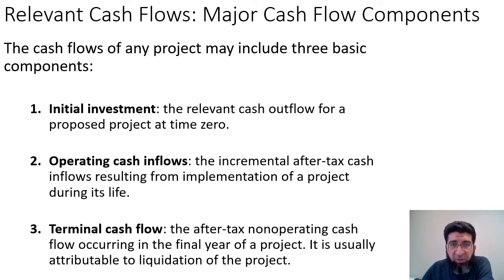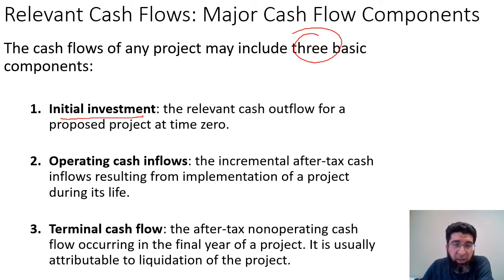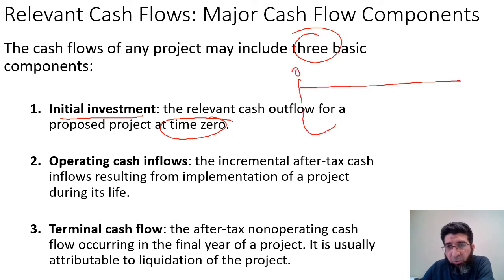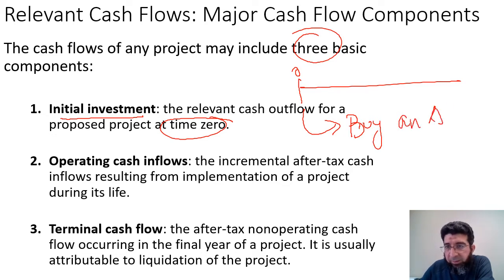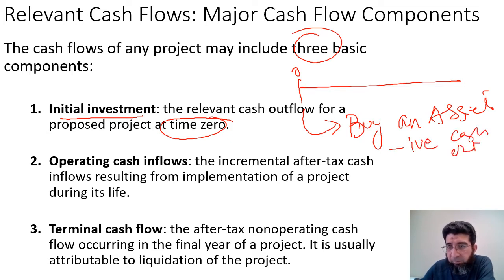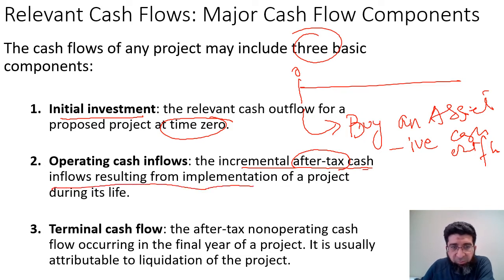There are three basic components of incremental cash flow. The first is initial investment — the relevant cash flow for a proposed project at time zero. When drawing a timeline, at time zero we are buying an asset, which represents a negative cash flow, meaning a cash outflow. The second component is operating cash flows — the incremental after-tax cash inflows resulting from implementation of the project during its life.